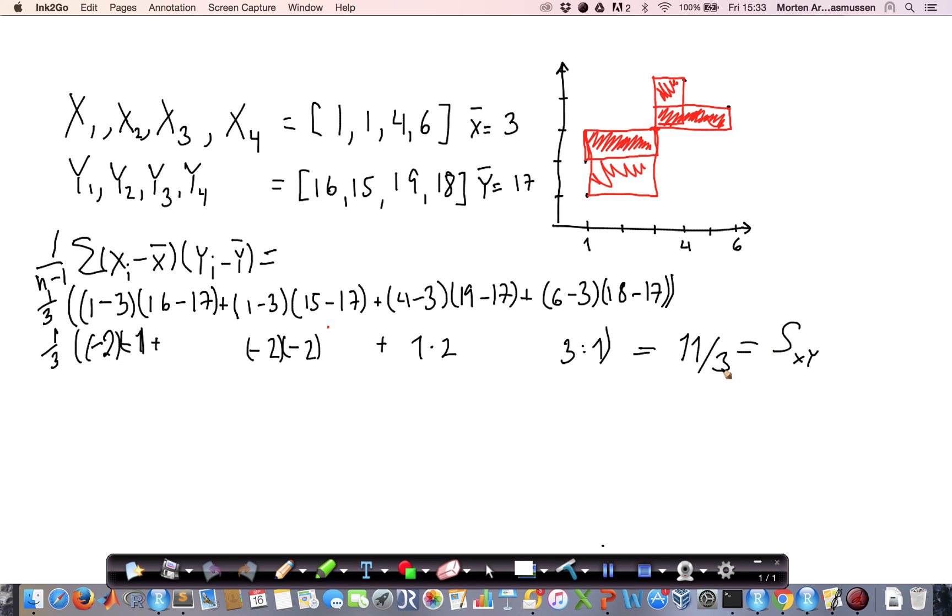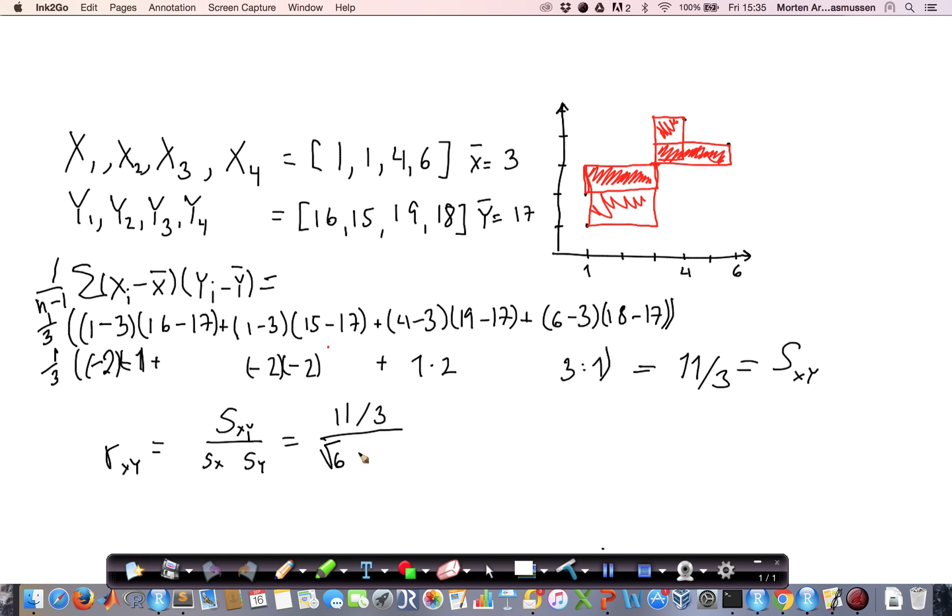Having the covariance between the two variables, which we call capital S with subscript xy, we can calculate the correlation coefficient. The correlation coefficient between two variables is the covariance divided by the standard deviation of the individual variables. If we calculate the standard deviation of x, square root 6, and y, square root 10 over 3, we get that the correlation coefficient is 0.82. We see that this number is pretty high, explaining that the relation between these numbers has a high correlation coefficient.